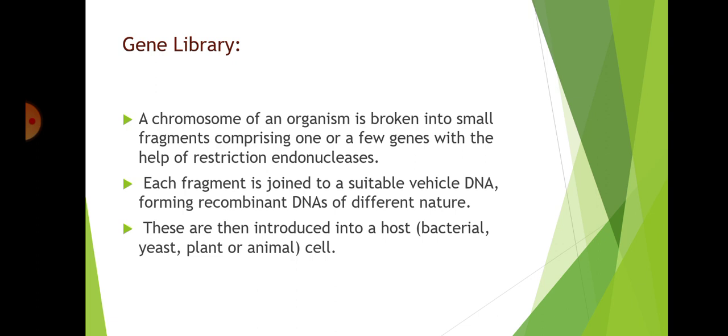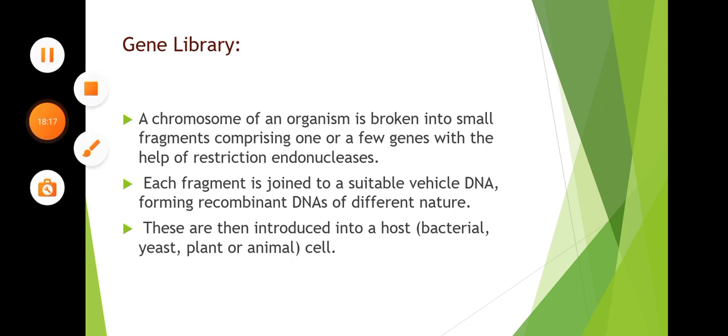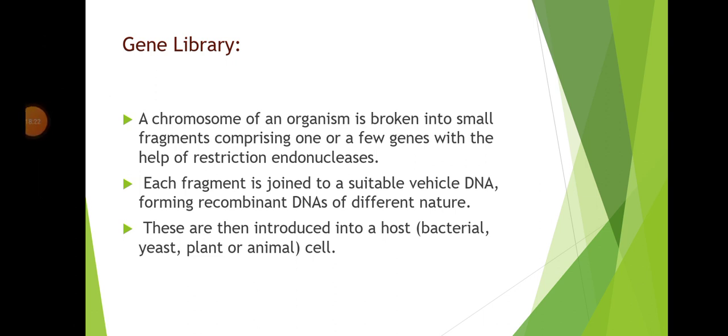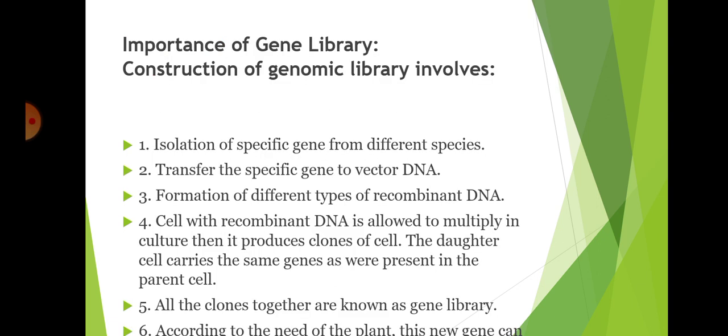In the gene library, a chromosome of an organism is broken into small fragments comprising one or a few genes with the help of restriction endonuclease. Each fragment is joined to a suitable vehicle DNA, forming recombinant DNAs of different nature. These are then introduced into a host — such as bacterial, yeast, plant, or animal cells. The foreign DNA fragment replicates as the host cell divides, producing a group of cells each containing a foreign DNA fragment. The daughter cells, identical to the parent cells, are referred to as a clone of cells — this process is called DNA cloning.